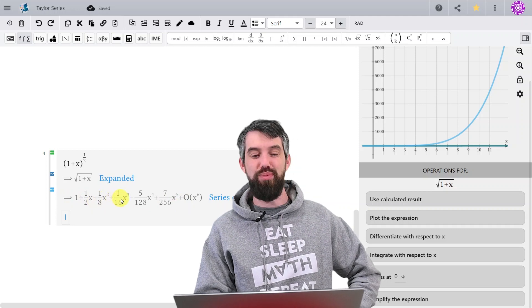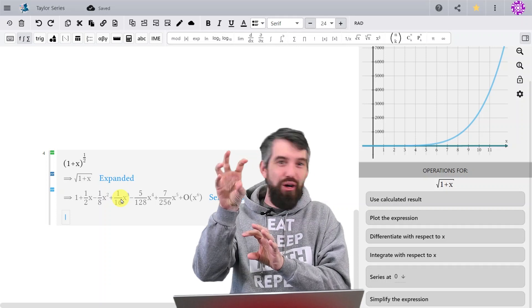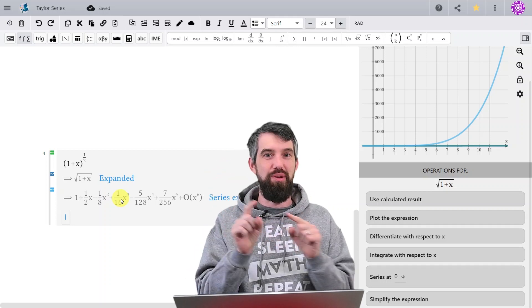1 plus a half, minus an eighth, plus a sixteenth, and so on. These are the terms that you get from that funky alpha choose n business that we've seen before.